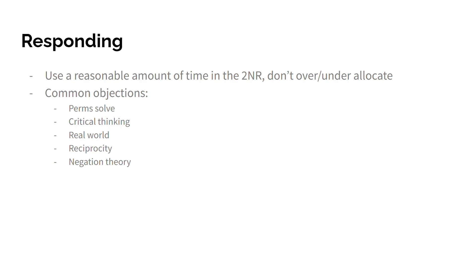Responding to conditionality: in the 2AR or whatever speech you're responding to condo, use a reasonable amount of time. Do not over- or under-allocate. You don't want to have just one line on condo if they have an actual developed condo shell in the 2AR — you want to spend some time on it. But you obviously do not want to spend too much time, like three minutes of the 2AR answering condo. Just strike that balance in the round. This depends on the round, but usually you want to be decently quick with it in the 2AR.